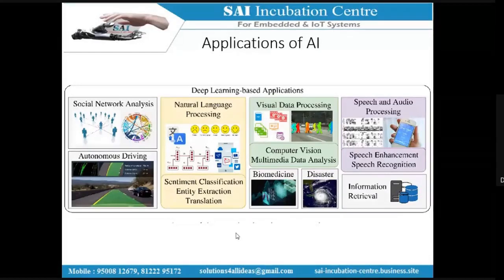Another application is visual data processing — classifying images to identify whether they contain a cat or dog, recognizing a specific person, or detecting objects in images. In COVID-19 situations, deep learning algorithms are being used to analyze X-ray images of lungs and predict how much COVID-19 can affect your body. These predictive analyses are happening now.